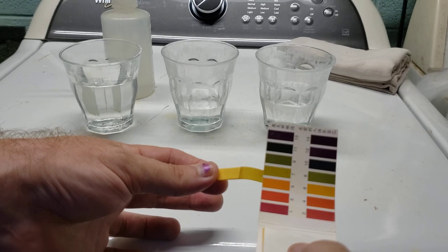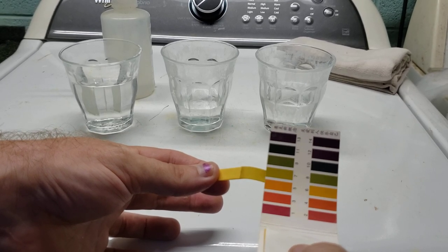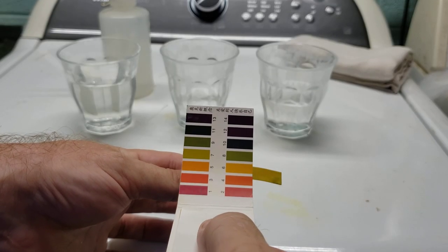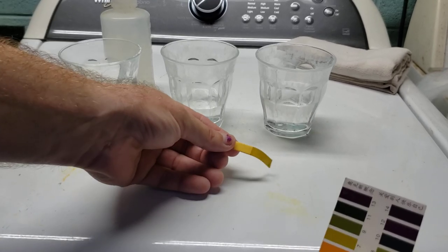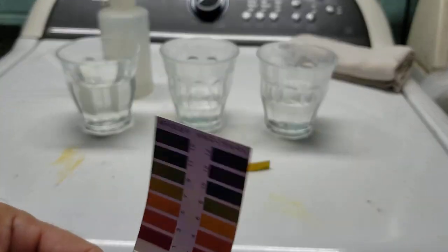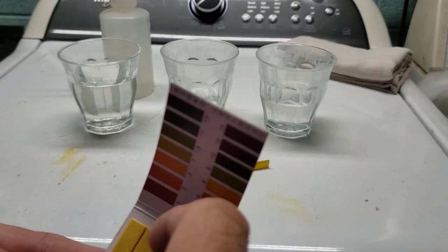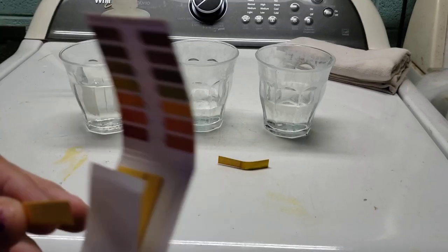I can't quite decide whether it looks closer to seven or whether it looks closer to six, so we're probably close to 6.7 or 6.8, something like that. So then my gudgeon tank, I expected to be closer to eight.